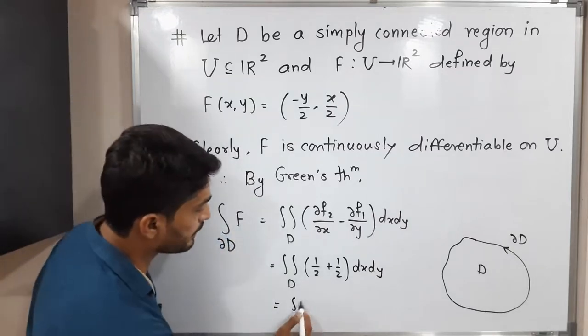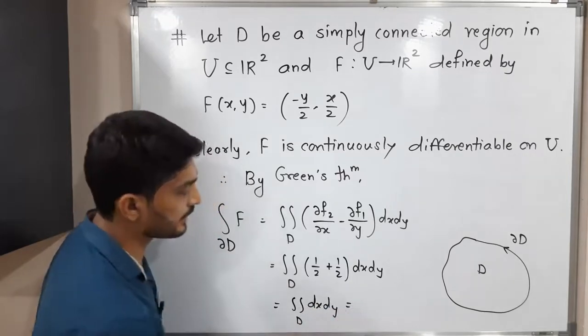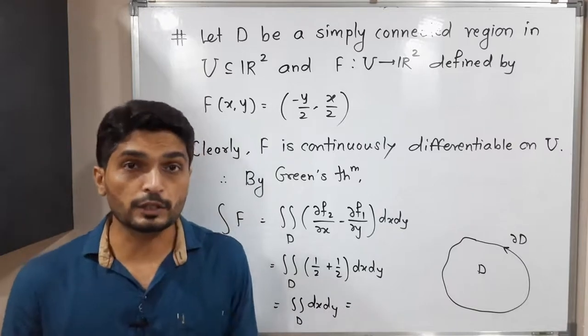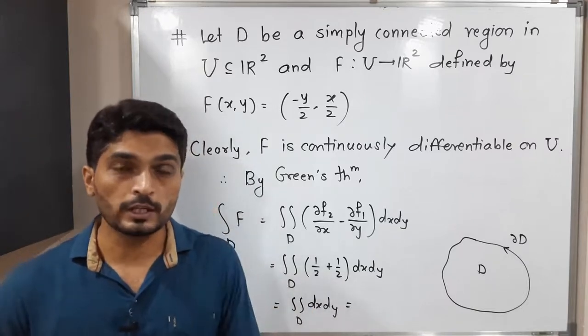After that I should write dx dy. So this equals 1/2 plus 1/2, which is 1. That's why we'll have double integration over D of dx dy.